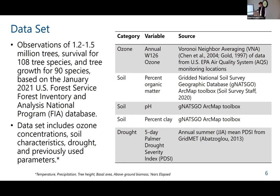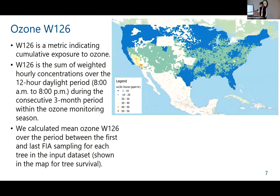To support the analysis, we used this dataset along with temperature, precipitation, tree height, basal area, above-ground biomass, and years elapsed, which is the same as used in the previous Horn analysis. But we augmented that dataset with annual W126 ozone exposure, soil characteristics including percent organic matter, pH, and percent clay, and Palmer drought severity index — key variables that likely also influence tree growth and survival directly, and might mediate the effect of ozone on trees.